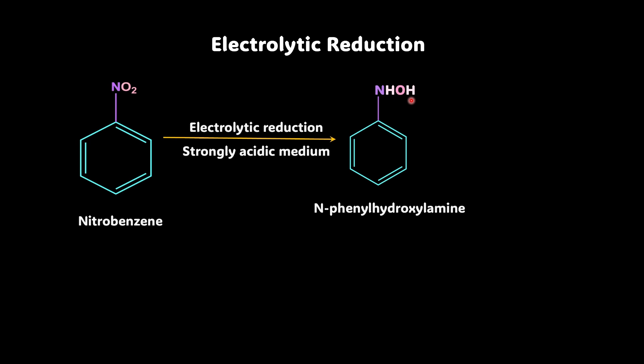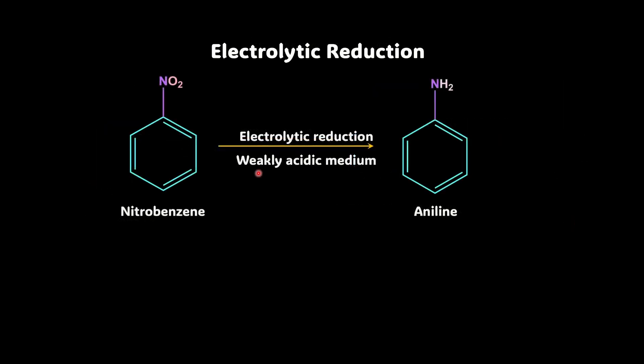Now, it will rearrange itself and it will give you para-hydroxy aniline. So you can see that you are not getting aniline, you're getting para-hydroxy aniline. So we were discussing the production of aniline. How can we get just NH2 then? Well, what you can do is you can start with nitrobenzene and take weakly acidic medium and then carry out the electrolytic reduction, okay? So strongly acidic medium is giving you para-hydroxy aniline, but here when you're using weakly acidic medium, that's when you're getting aniline. Point to be noted, all right?